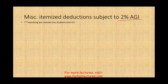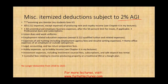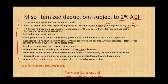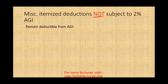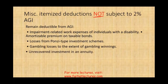Miscellaneous itemized deductions subject to the 2% adjusted gross income floor are no longer deductible from 2018 to 2025. This includes Section 212 expenses (except expenses for producing rental and royalty income), hobby expenses up to hobby income, and home office deductions — all gone. However, miscellaneous itemized deductions not subject to the 2% floor remain deductible, such as impairment-related work expenses, amortizable premium on taxable bonds, gambling losses to the extent of winnings, and unrecovered investment in an annuity.